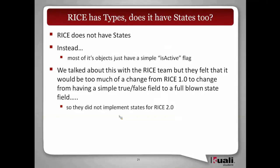You might ask: does Rice have states too? They don't. Most of their objects have what's called an 'is active' flag. Sometimes it's simpler to just check an is-active flag, and for most simple objects it's really just a Boolean — yes, is active. Kuali Student went with full-fledged states. When they looked at it, they agreed it would apply more for complex objects, but they don't have time to make that change and replicate it throughout the system. So they stuck with their is-active flags — that's just the way it is. They don't have something called state, but there's something similar on most of their objects: the is-active flag.